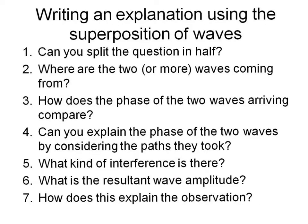The steps you should include in your explanation are: one, can you split the question in half — can you make the question into two smaller questions, which will make it easier to answer? Two, where are the two waves coming from that are interfering? Three, how does the phase of these two waves that are arriving compare? Four, can you explain why the phase of the two waves is what you said in step three by considering the paths that they've followed? Five, what kind of interference is there — constructive or destructive? Six, what is the resultant wave amplitude — large or small? And seven, link that back to explaining the observation you were asked to explain in the first place.